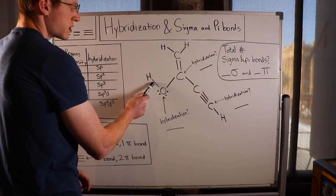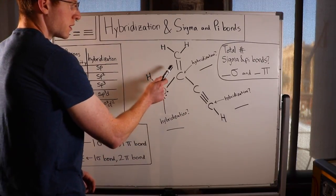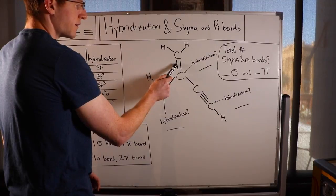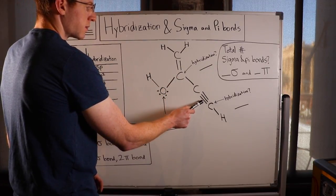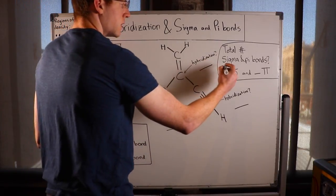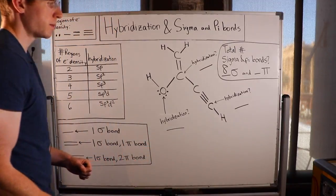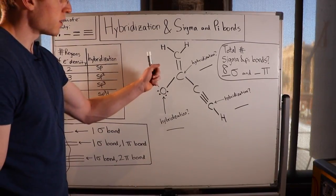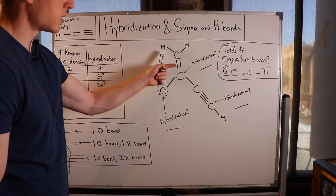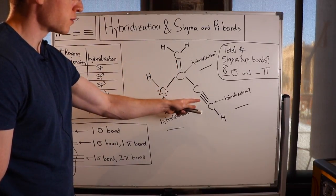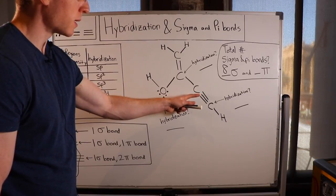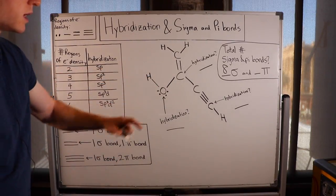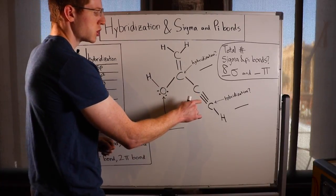Let's start counting. Going through the molecule, we count one, two, three, four, five, six, seven, eight sigma bonds total. Now for the pi bonds — remember, pi is the second or third bond that two atoms make with one another. Here we have one pi bond from a double bond, another pi bond, and then a triple bond which gives us a second and third pi bond. So we have a total of three pi bonds.